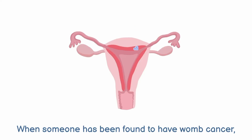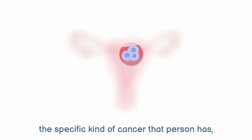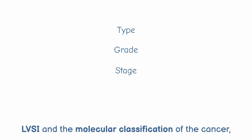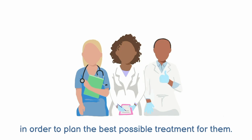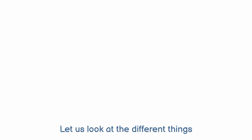When someone has been found to have womb cancer, we need to find out more about the specific kind of cancer that person has, such as the type, grade and stage, as well as LVSI and the molecular classification of the cancer, in order to plan the best possible treatment for them. Let us look at the different things we need to find out.